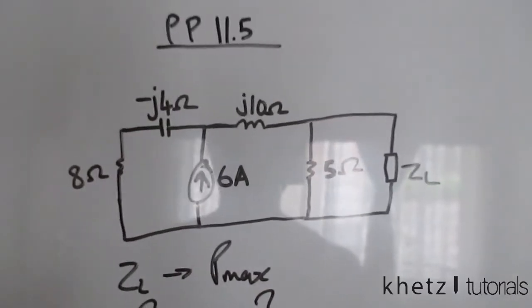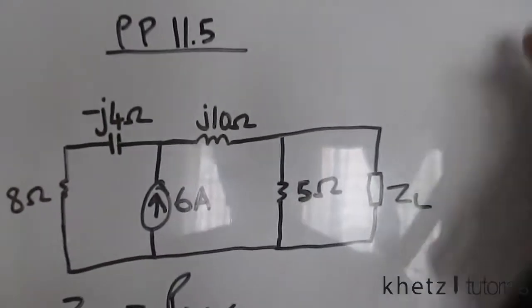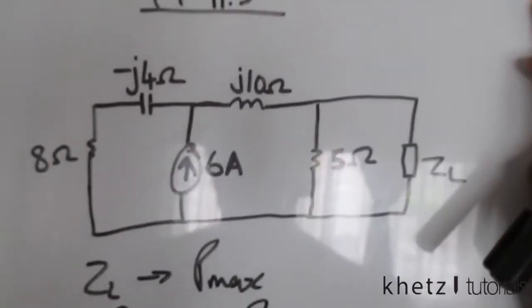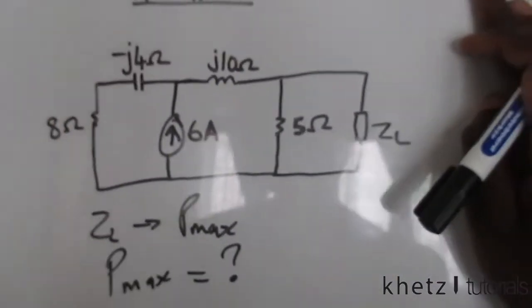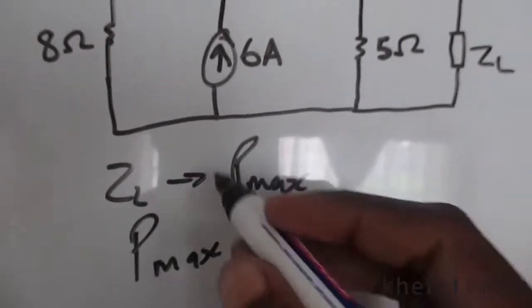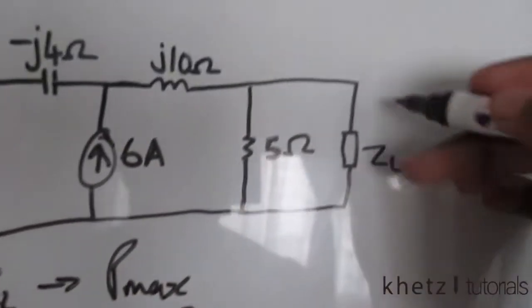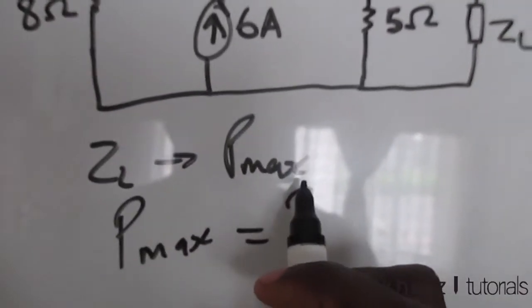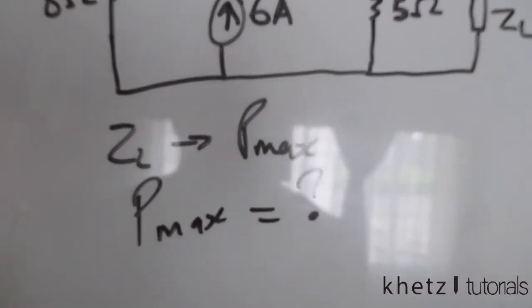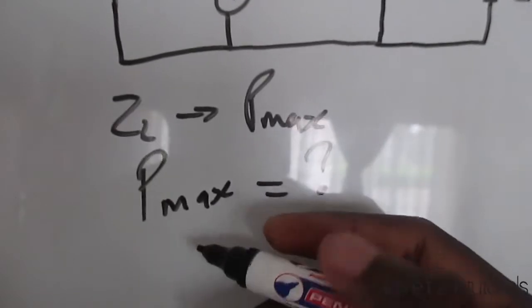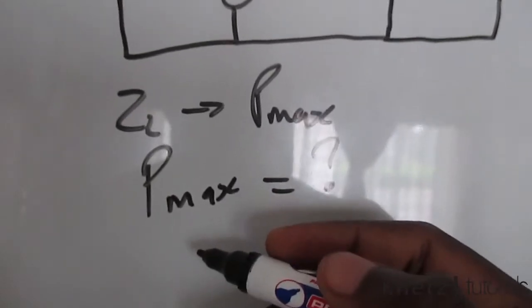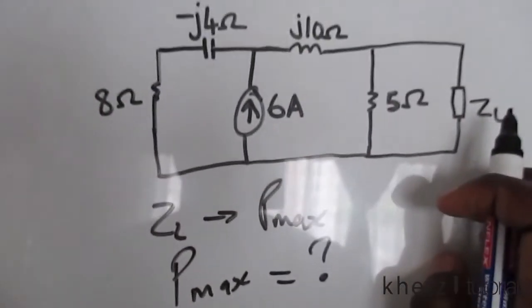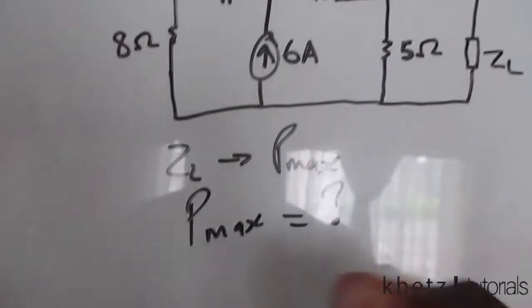Welcome to Cat's Tutorials. In this video I'll be covering practice problem 11.5. Given the circuit, we are asked to find ZL, which is the load impedance that absorbs maximum average power, as well as the value of our maximum average power. So let's do that quickly.